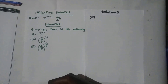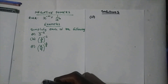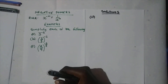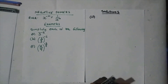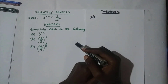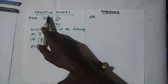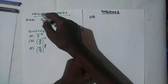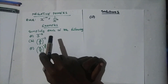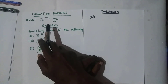Good afternoon everyone. This afternoon we are going to look at how to simplify negative powers of indices. We have a rule on negative powers. Here is the rule: if you have x to the power negative m, you notice that the power is negative, and the way you simplify this is by changing it to a positive.